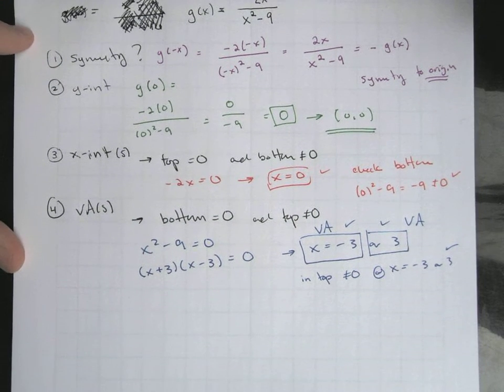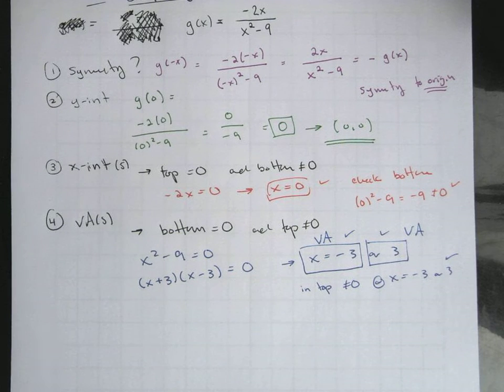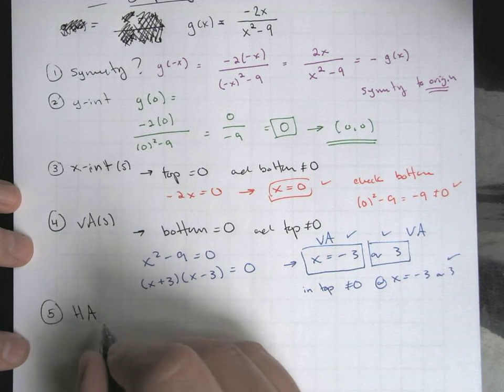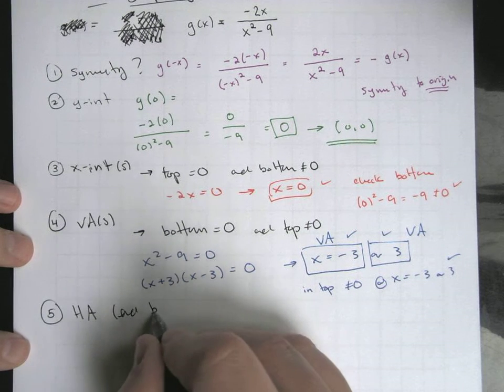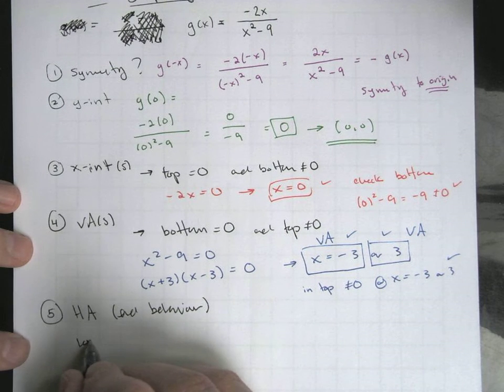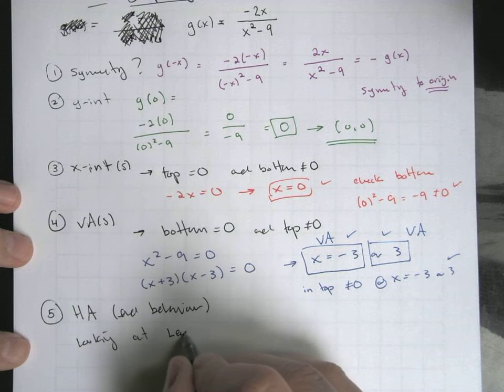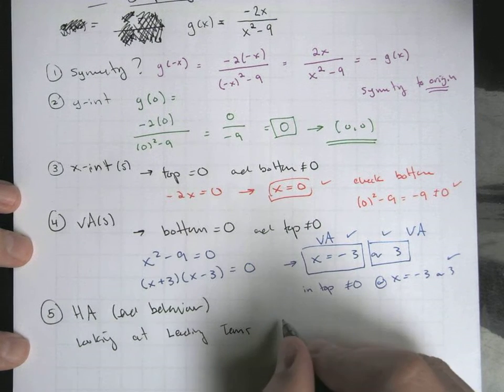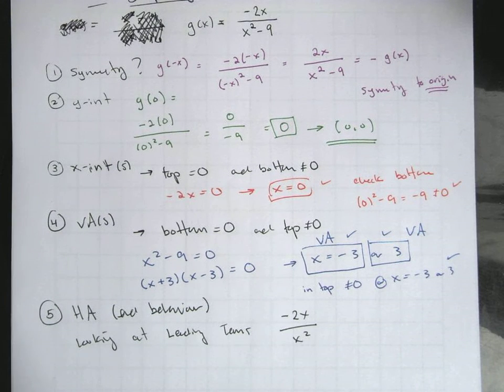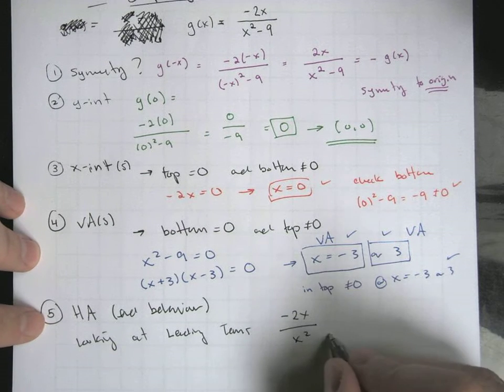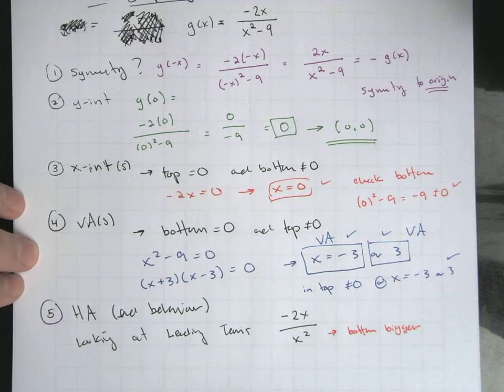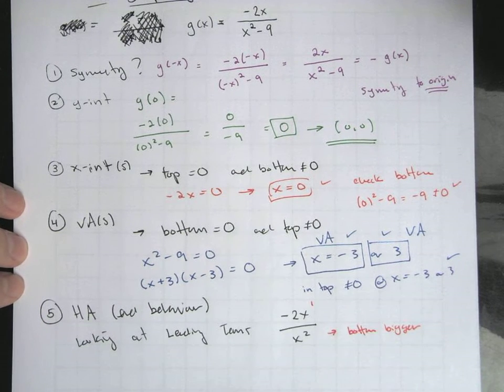Step number five, that's going to be our horizontal asymptotes. Rather, I should say horizontal asymptote. We're going to have kind of one or none. So this is sort of slash our end behavior. So looking at our sort of leading terms. So this is going to be what, negative two x over x squared. So the question is that relationship between the degree of these two. This is one where the bottom degree is bigger. The bottom is the higher power. This is, of course, would just be x to the one.